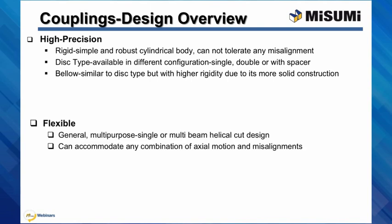Flexible couplings are general and multipurpose couplings. They come with a single or multi-beam helical cut design and can accommodate any combination of axial motion and misalignments. Most popular are single beam couplings, where customers can choose between a short and long version — short for more compact and space-restricted design, or longer models offering greater tolerance of misalignment with reduced torque accuracy. If greater angular misalignment is needed, three-piece construction or universal joint couplings are to be used.